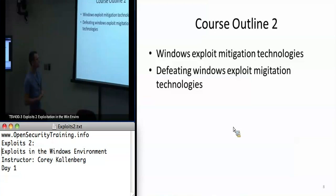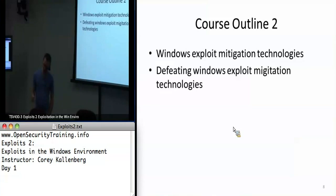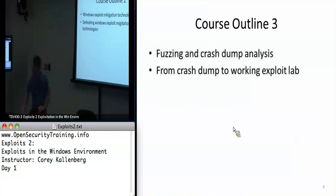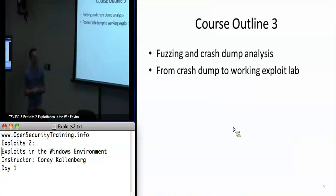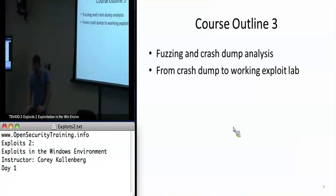Day two is going to be all about Windows exploit mitigations and how they are bypassed. We'll systematically go down the list of what Windows puts in our way as exploit developers and how we get around them. The day two lab will basically have us developing an exploit for a vulnerability we exploited on day one, but with all the mitigations turned on. We'll modify our payload to get past everything — that'll be kind of an all-day lab. Day three is going to be all about fuzzing. I wrote an application called 'Corey's Crappy Document Reader,' similar to 'Corey's Crappy Allocator,' and we'll be fuzzing it for vulnerabilities — generating crashes and analyzing them to see if they're exploitable.